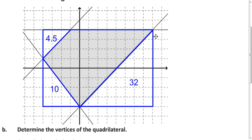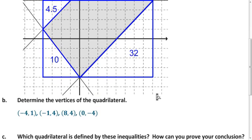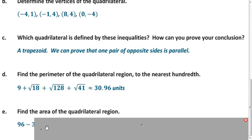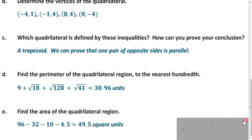So, here is how I decompose the region. This triangle has an area of 4.5, this one has 10, and this one is 32. And we have the big rectangle. And so, the rectangle has an area of 96. We subtract those three triangles, their areas, and we end up with 49.5 square units.